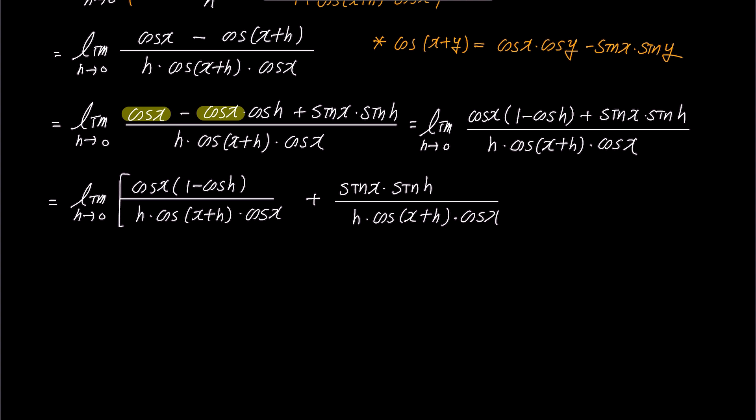The common factor cosine x in the numerator and in the denominator of the first fraction can be cancelled out.